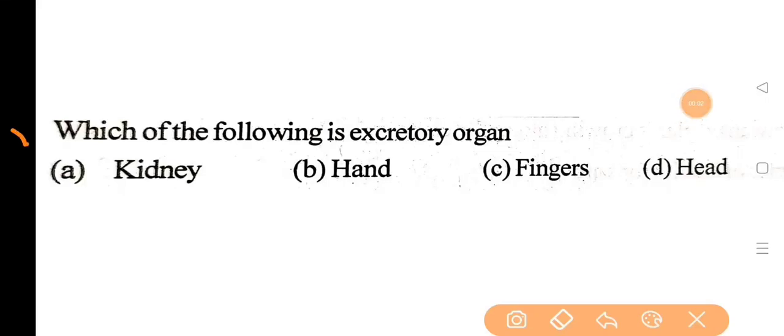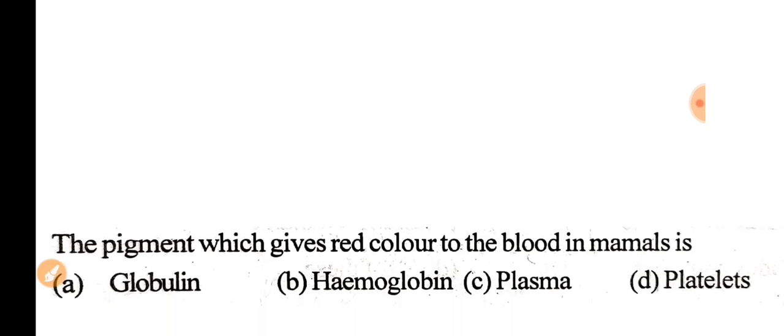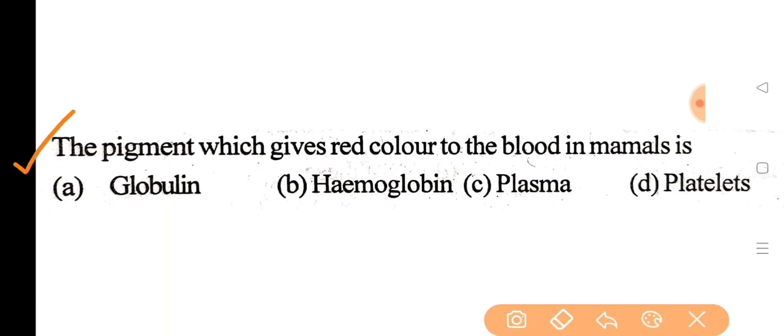First question: which of the following is excretory organ? Correct answer is option A, kidney. Excretory organs are kidney, skin, liver, intestine, lungs, as well as ureter, urethra, and urinary bladder.